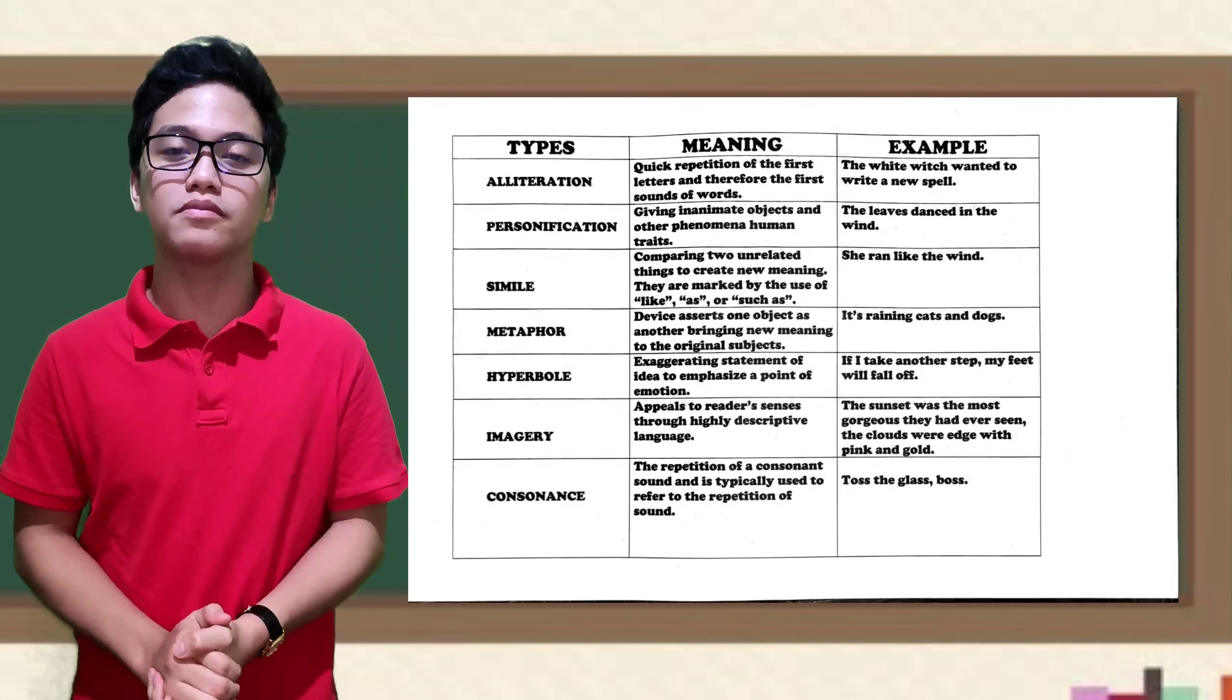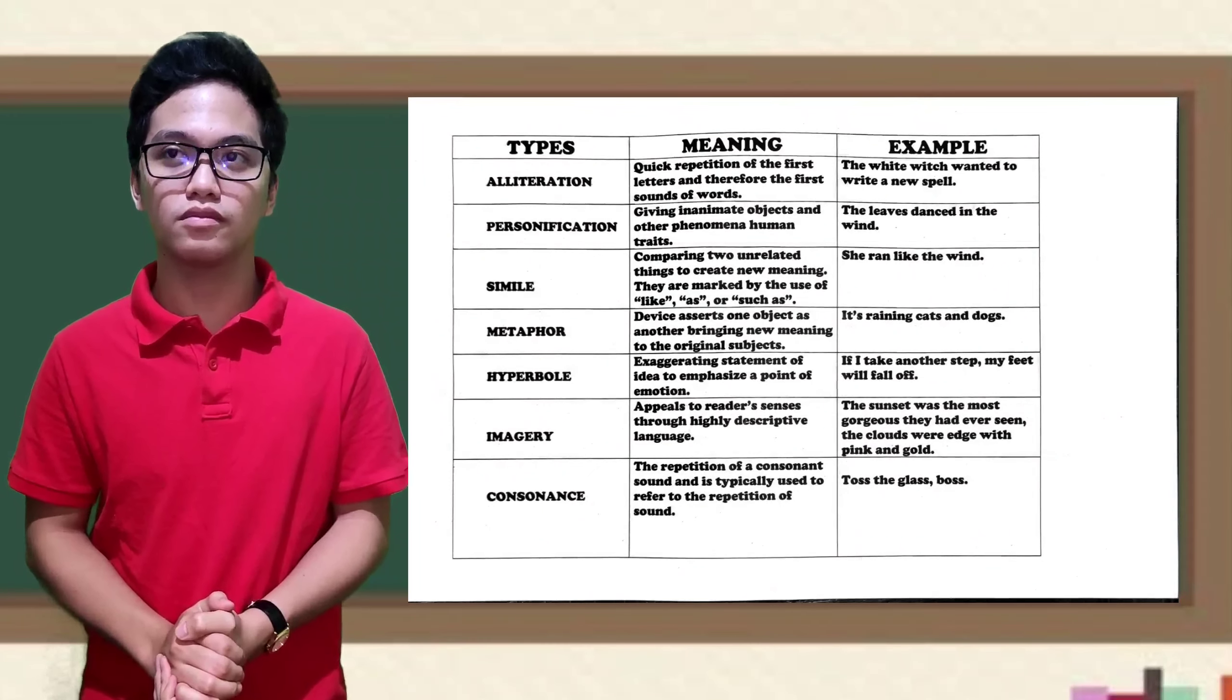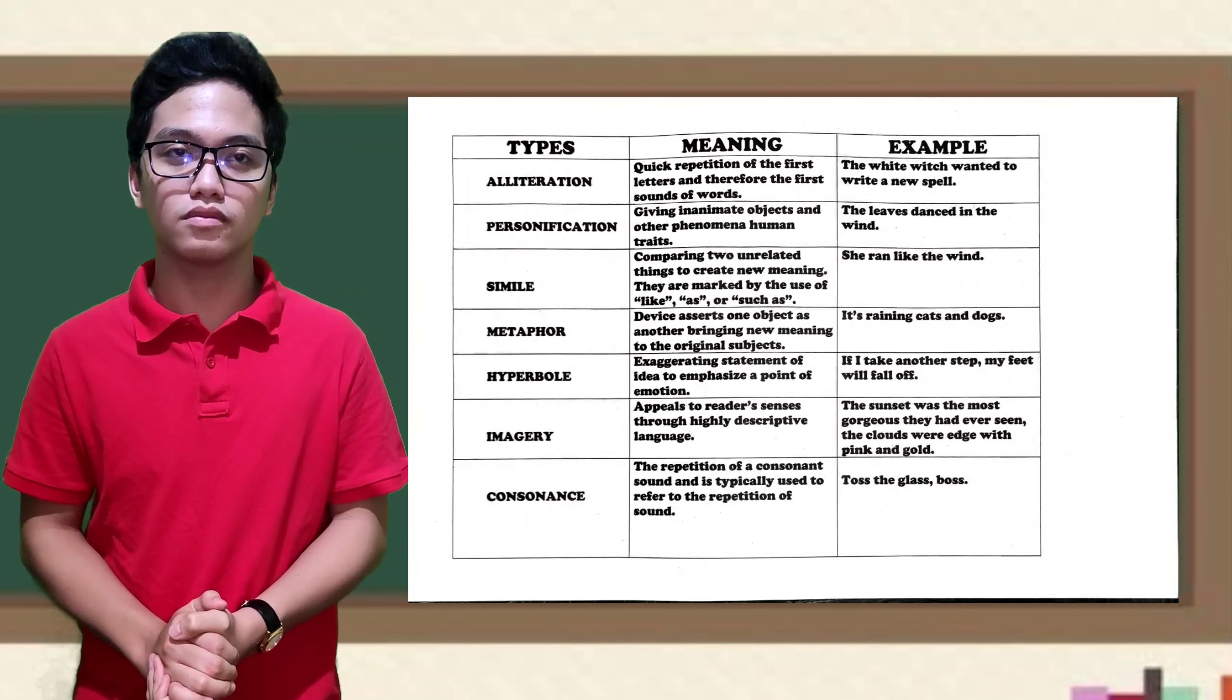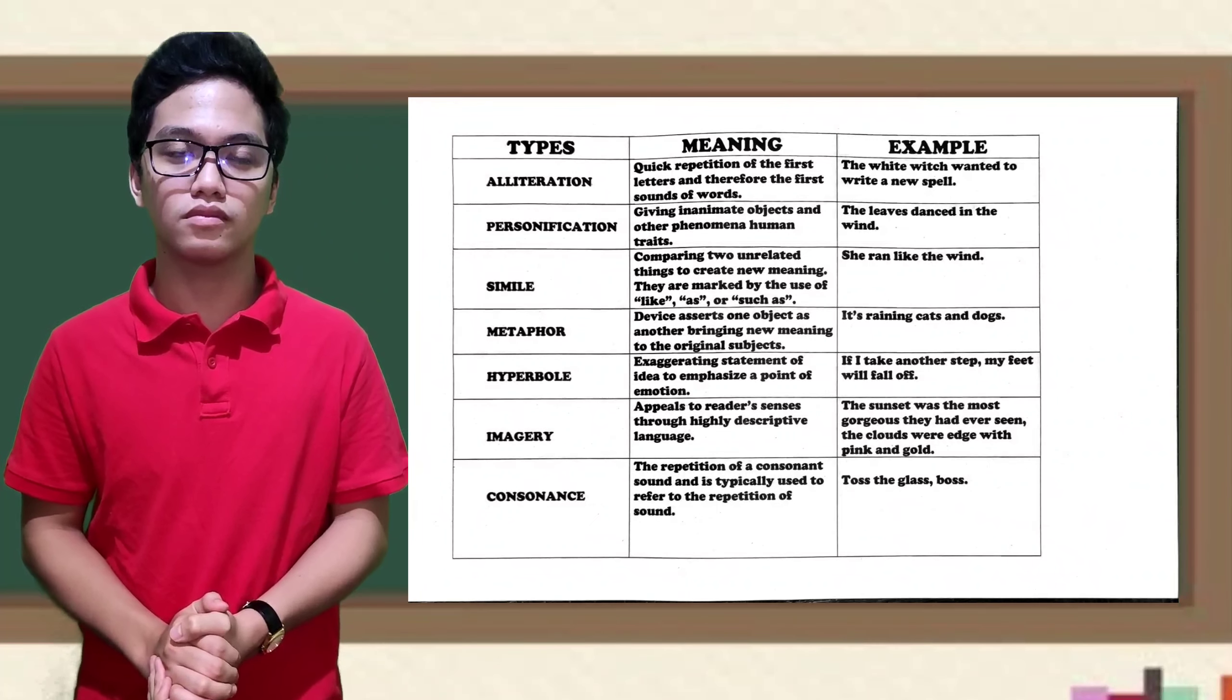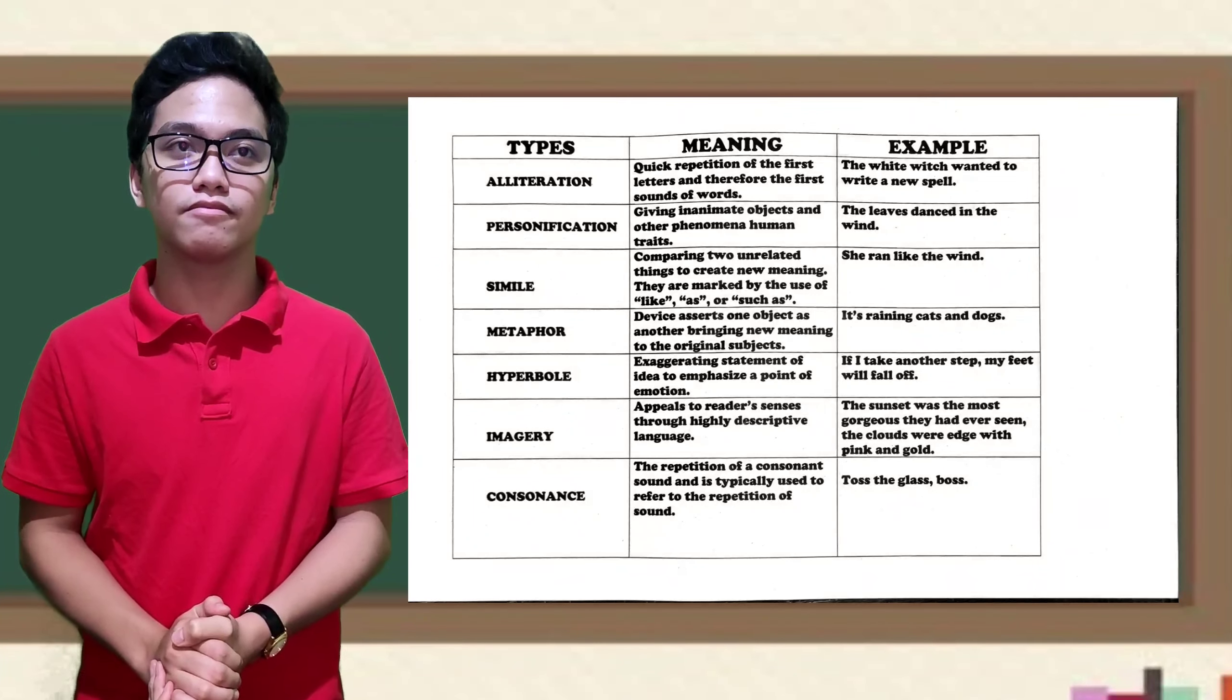Number three? Simile. Simile is comparing two unrelated things to create new meaning. They are marked by the use of like, as, or such as. Example, she ran like the wind. Very good.